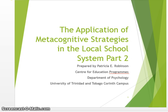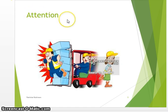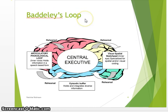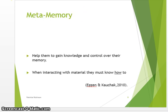In part one, we saw the importance of maintaining attention and the need to teach children how to attend, along with the activities that can be used. Additionally, we looked at the factors that we must consider to enhance our information processing — one being Paivio's dual code theory and the other, Baddeley's loop. Today, I intend to take you a few steps further as we understand the whole concept of metacognition. So we are going to look now at metamemory.